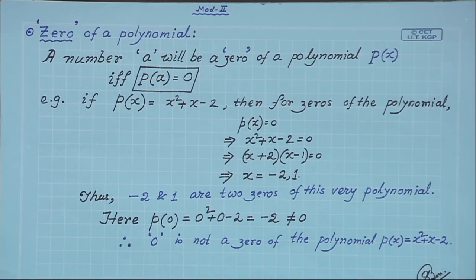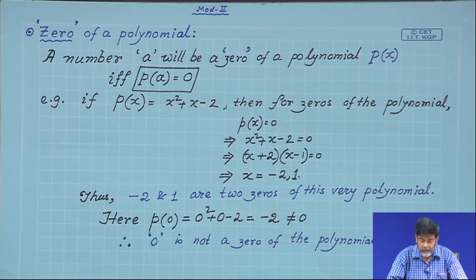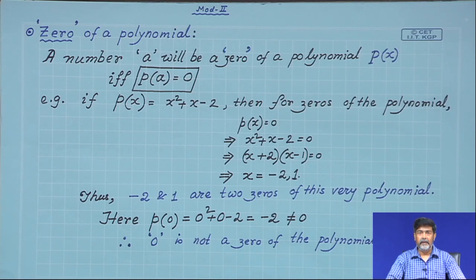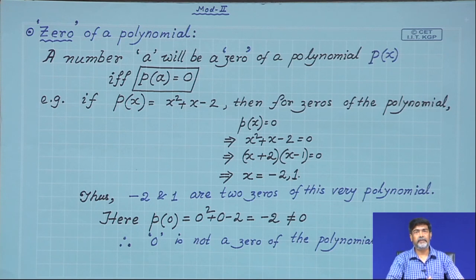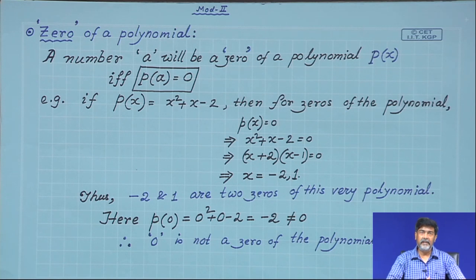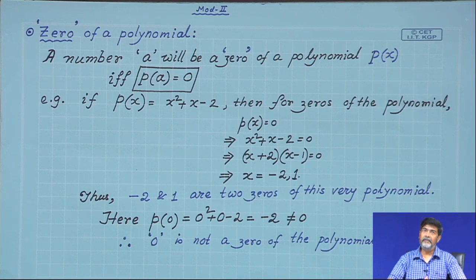I would like to define a new term: zero of a polynomial. A real number a is said to be a zero of a polynomial p(x) if and only if p(a) = 0. That is, if we substitute a for x and the result vanishes, then a is called a zero of the polynomial.